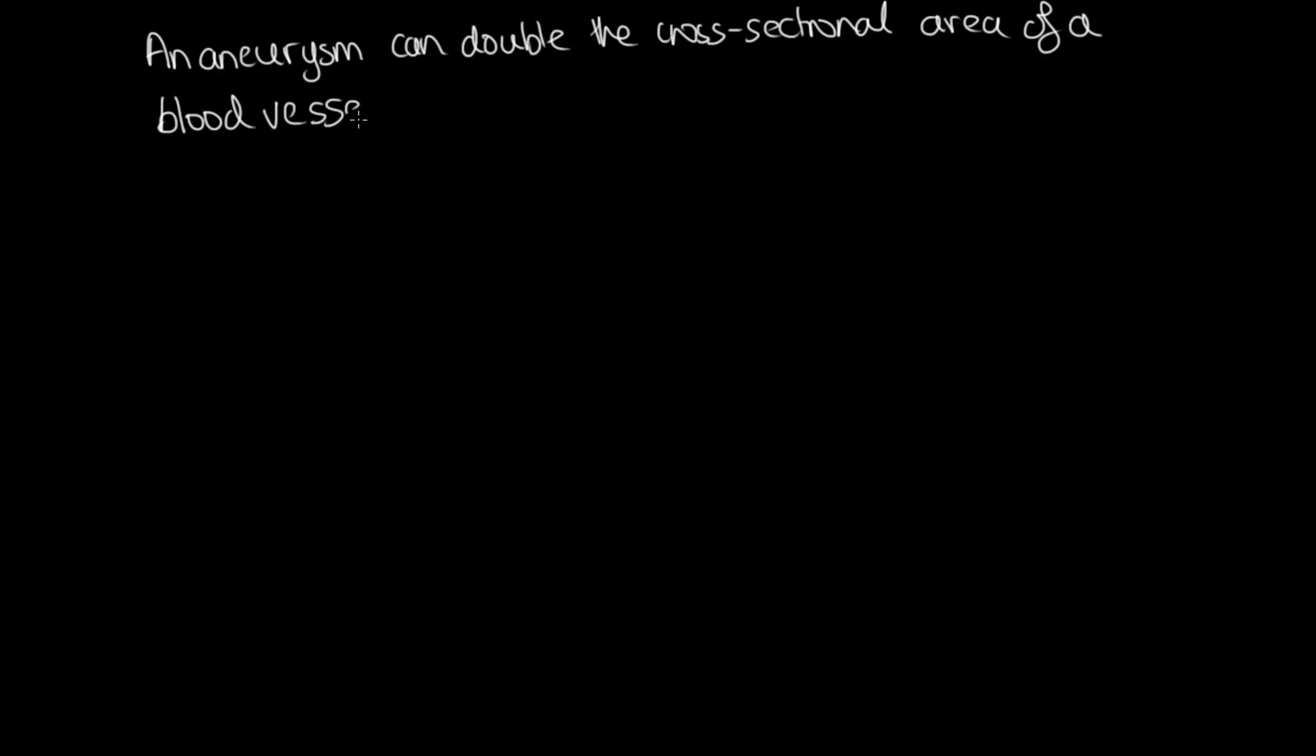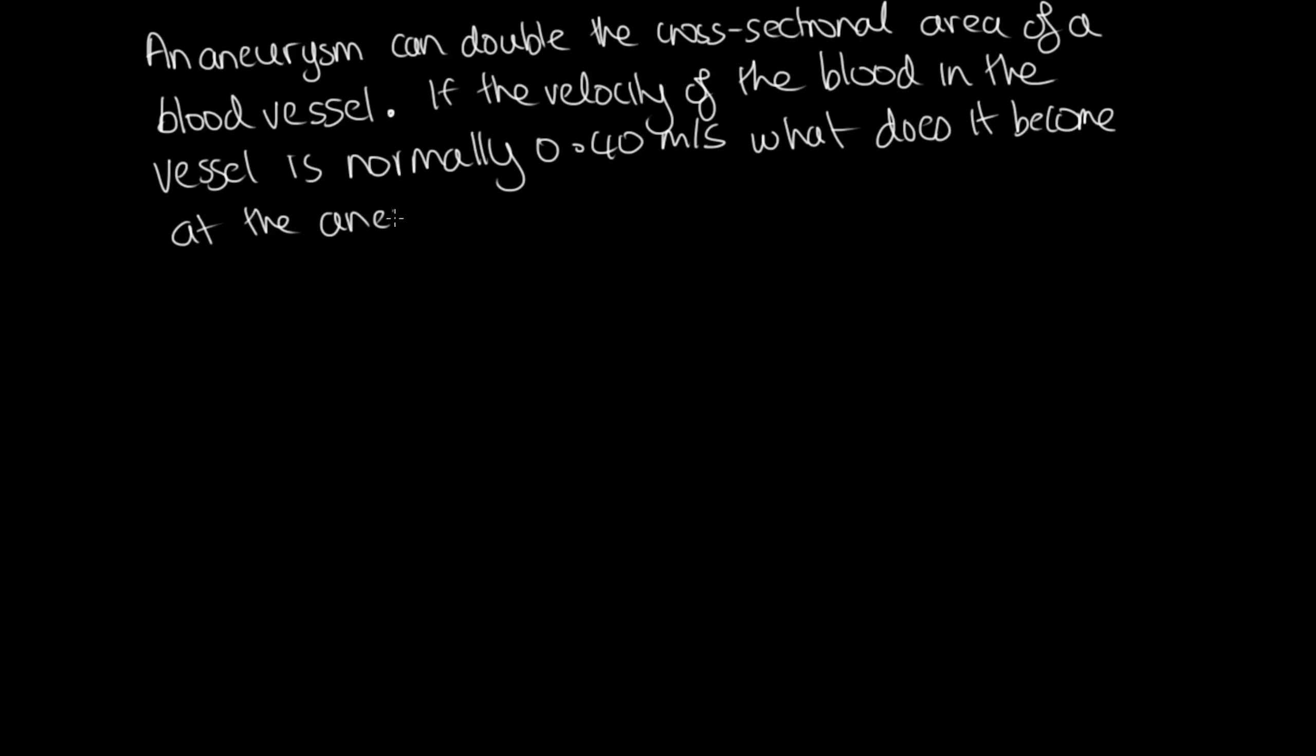So the question is, an aneurysm can double the cross-sectional area of a blood vessel. If the velocity of the blood in the vessel is normally 0.40 metres per second, what does it become at the aneurysm? What is the change in pressure on the wall?